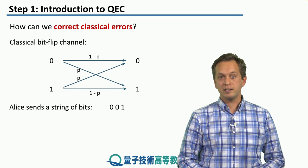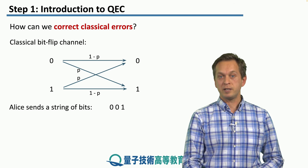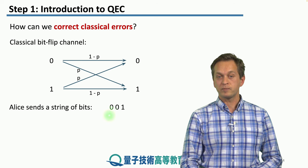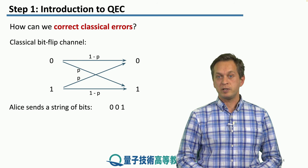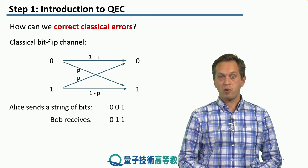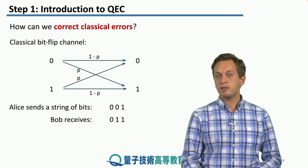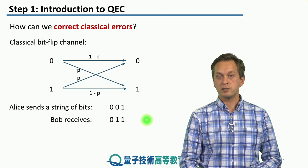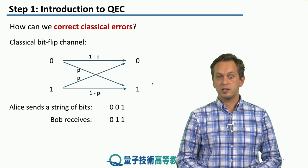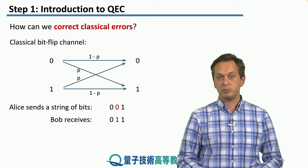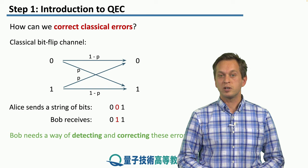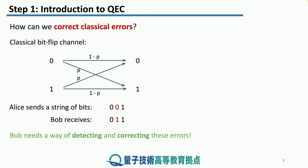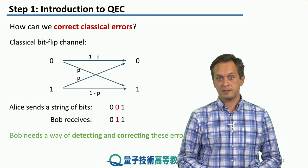If Alice is trying to communicate the bit string zero zero one, she sends it through the channel but some bits might get flipped. Bob receives, say, the message zero one one — the second bit has flipped from zero to one. He has no means of detecting whether an error has occurred, and this is what we're going to tackle next.